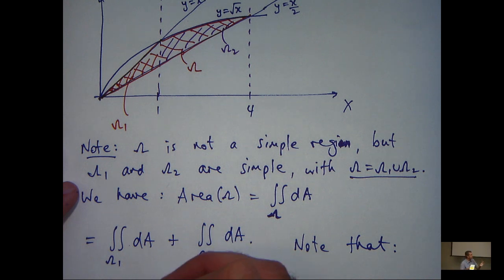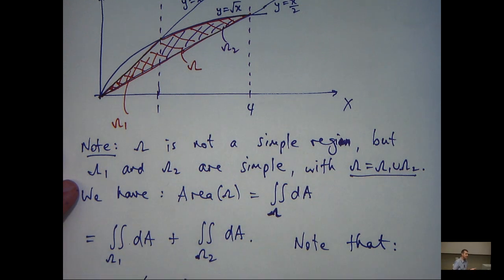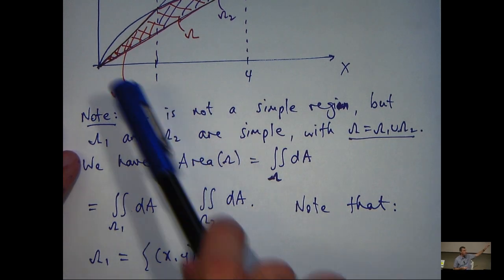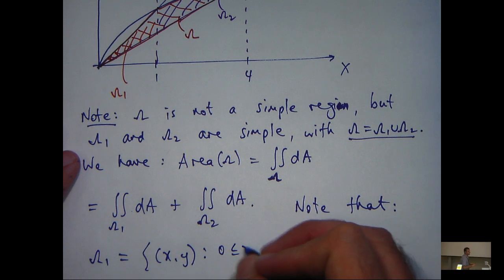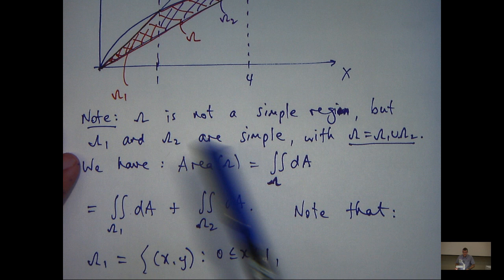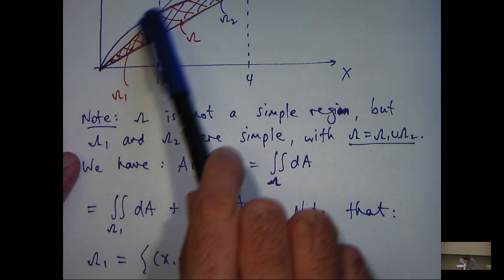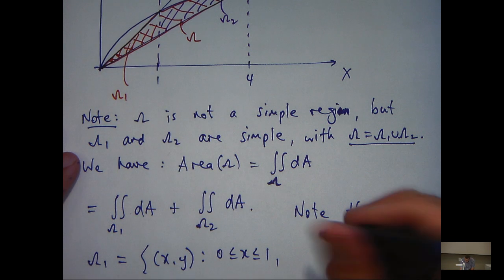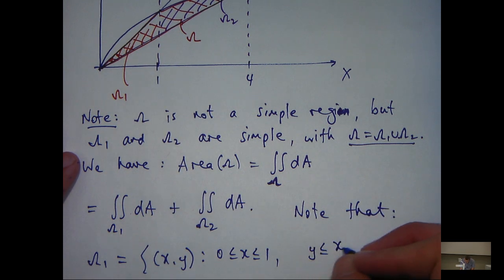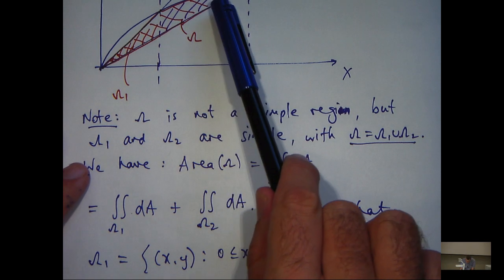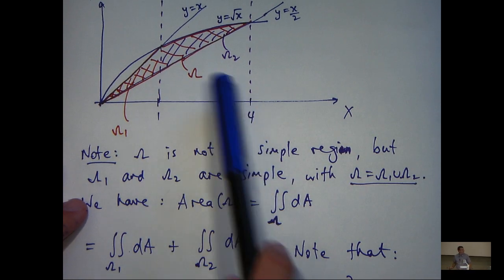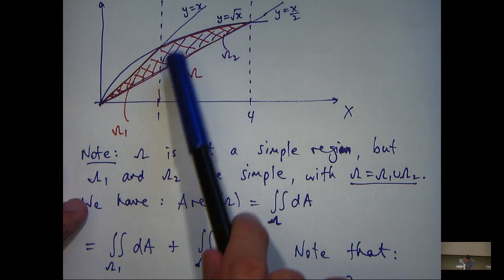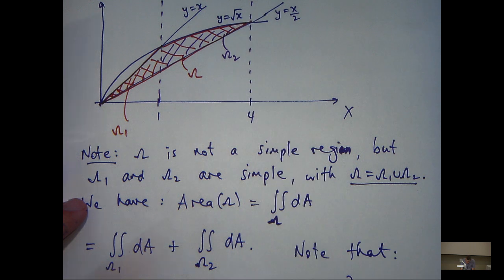So from our graph, we can describe these two regions. Let's consider omega 1. It's all those points such that x is between 0 and 1 and y is between these two functions here. So the top function is y equals x, the bottom function is y equals x on 2. And let's look at omega 2. Well, omega 2, the x points are between 1 and 4 and the y points are between these two functions. So y is between x on 2 and root x.